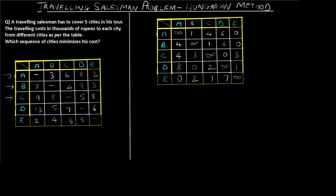I have calculated all the values for step 1 across all rows. Now we move to step 2, where we check the columns, find the minimum value of each column, and subtract it from all values in that same column. These operations are performed on the new table we found in step 1.